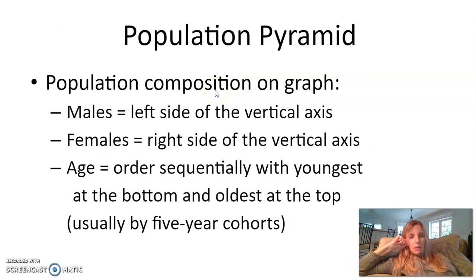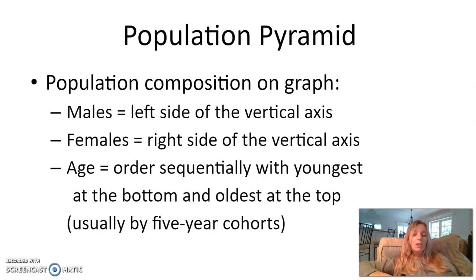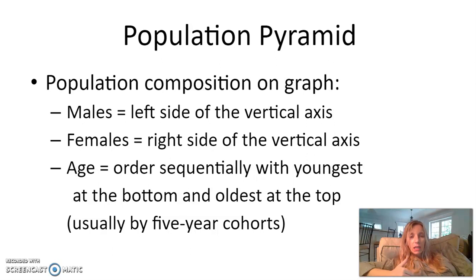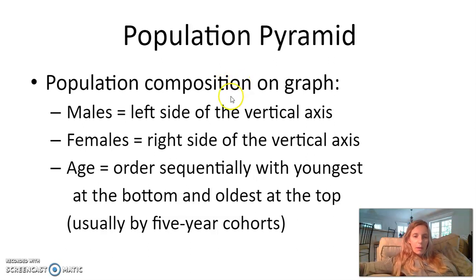Population composition shown on a graph is a population pyramid. Males are on the left side and females are on the right. It is divided into five-year cohort groups with the youngest at the bottom and the oldest at the top. The youngest cohort is zero to five years old, then five to ten, ten to fifteen, fifteen to twenty, and so on. The crude birth rates for the zero-to-five group are represented at the bottom, and that's what shapes the actual population pyramid.